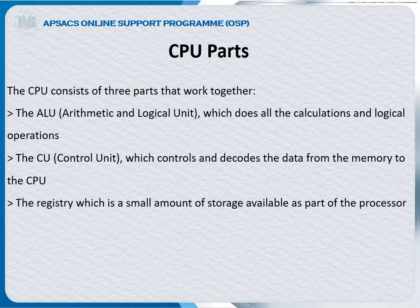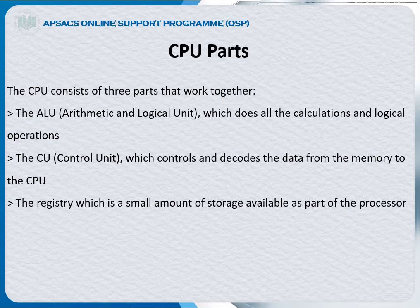The next topic is CPU parts. The CPU consists of three parts that work together, though normally we divide the CPU into two parts: ALU and CU. ALU stands for Arithmetic and Logical Unit, which does all the calculations and logical operations. Arithmetic means plus, minus, multiply; logical operations mean AND, OR, NOT operations. CU stands for Control Unit, which controls and decodes data from memory to the CPU and coordinates all the components with each other.